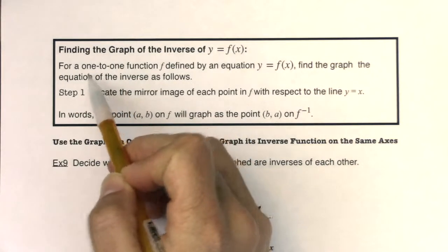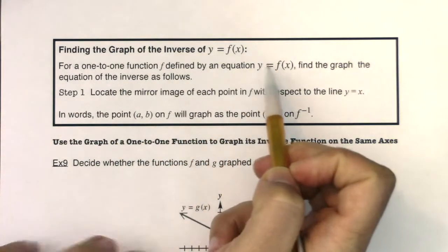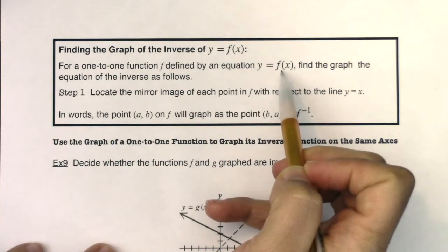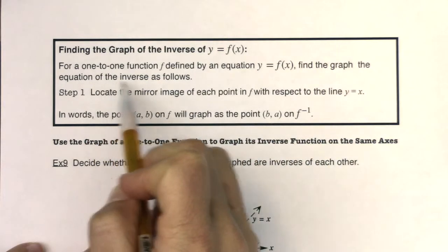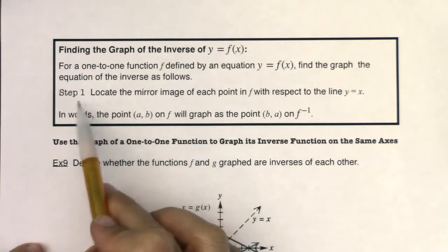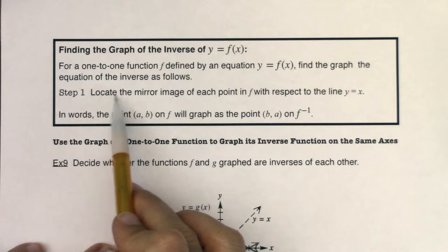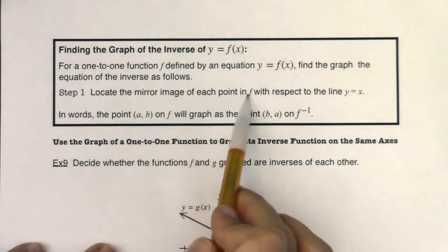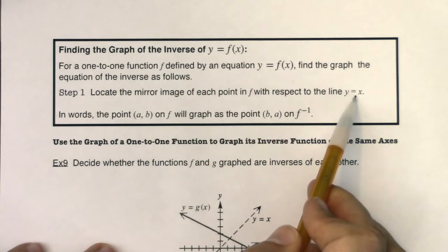So for a one-to-one function f defined by the equation y equaling f of x, find the graph of the equation of the inverse as follows. Alright, so step one, there's really only one step, locate the mirror image of each point in f with respect to the line y equaling x.